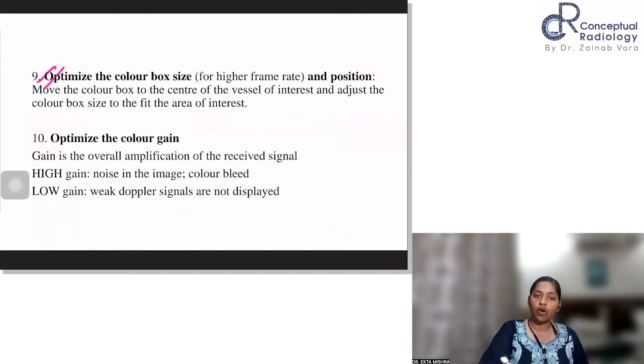So after that, you have to optimize the color box size. You want to achieve the highest frame rate for that image. And then position of the box. You don't want a big box covering entire screen. You want to focus on a small vessel. So you have to have a bull's eye view. You have to see that image and you have to focus the size of the color box accordingly. So try to move it to the center of the vessel and then adjust the size to fit the area of interest.